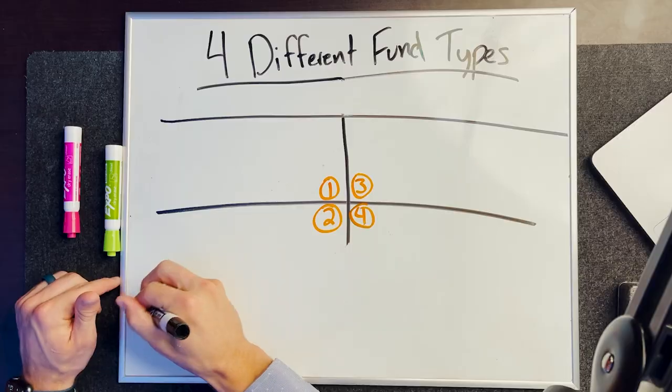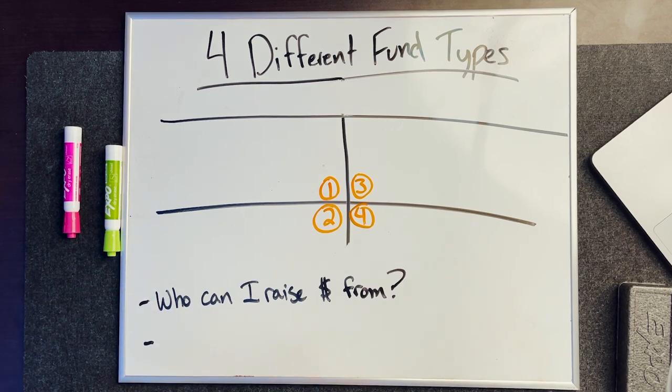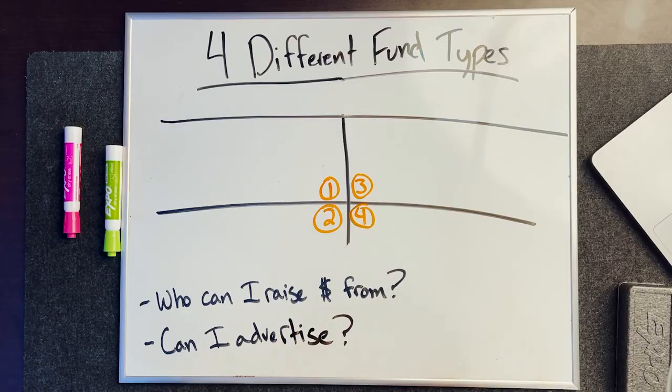Let's hop into the four different fund types. There are two big questions you have to ask yourself. Number one: who can I raise money from? And number two: can I advertise? The SEC loves to limit what we can and can't do — who we can raise money from and how we advertise to those people.